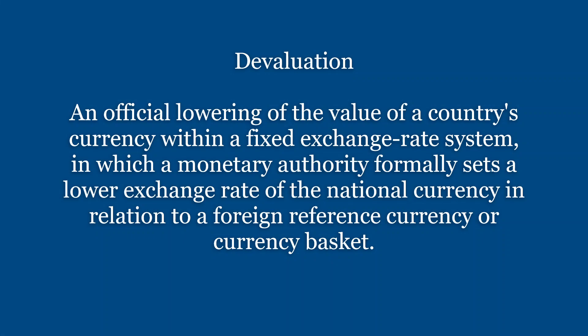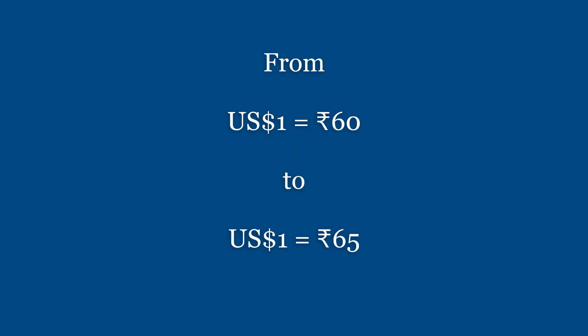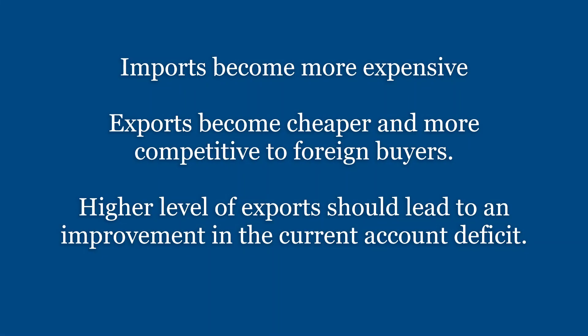The first term is devaluation. Devaluation is about the fixed exchange rate system. RBI will be deliberately reducing or lowering the currency value. For example, if 1 US dollar was equal to Rs. 60 and the central bank lowers it so that 1 US dollar is now equal to Rs. 65, the rupee has been devalued. You now have to pay more rupees per dollar — dollars become more expensive.